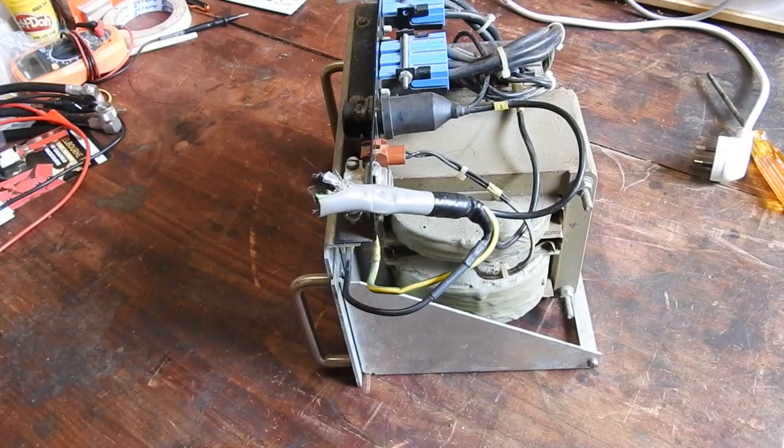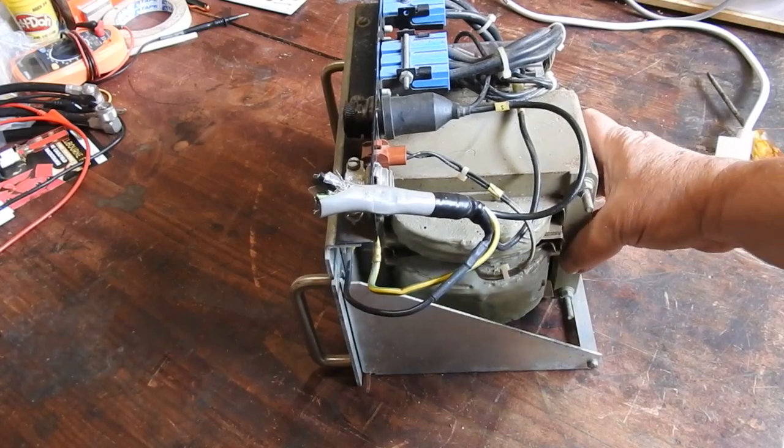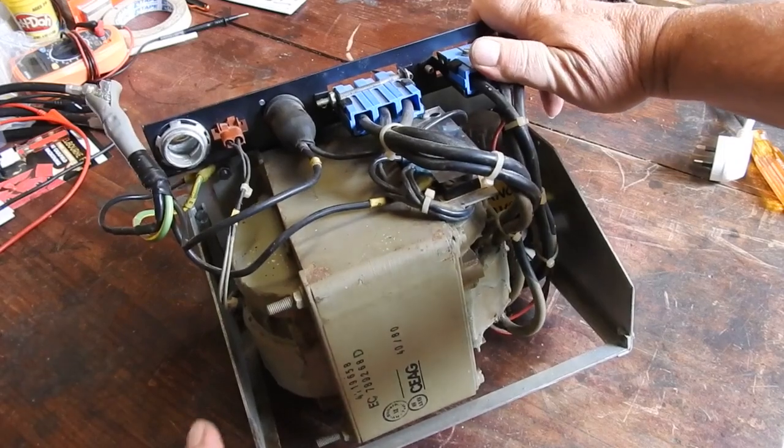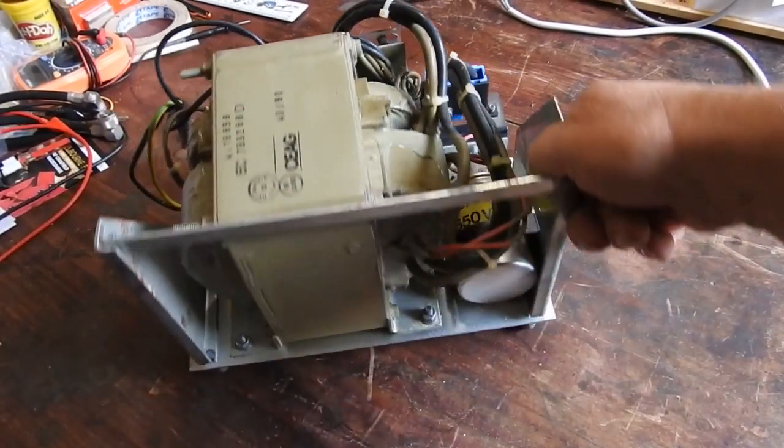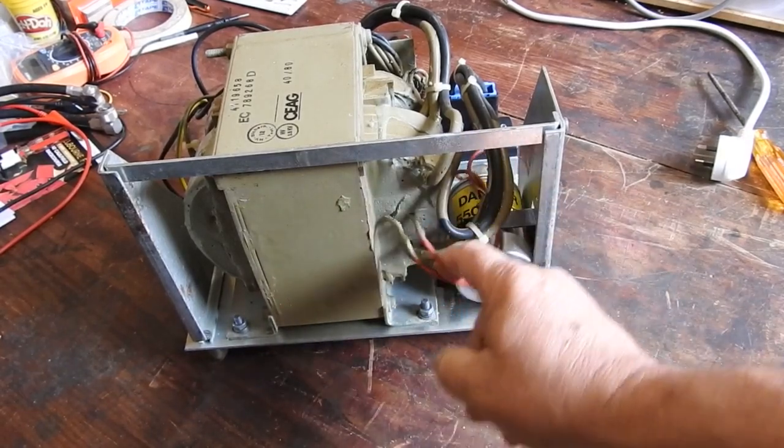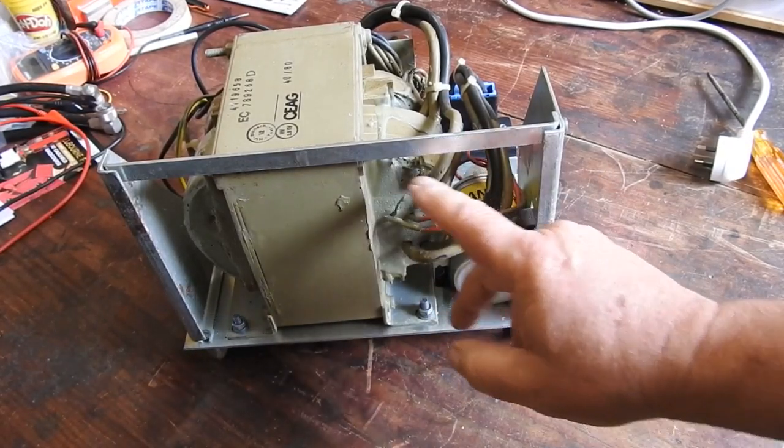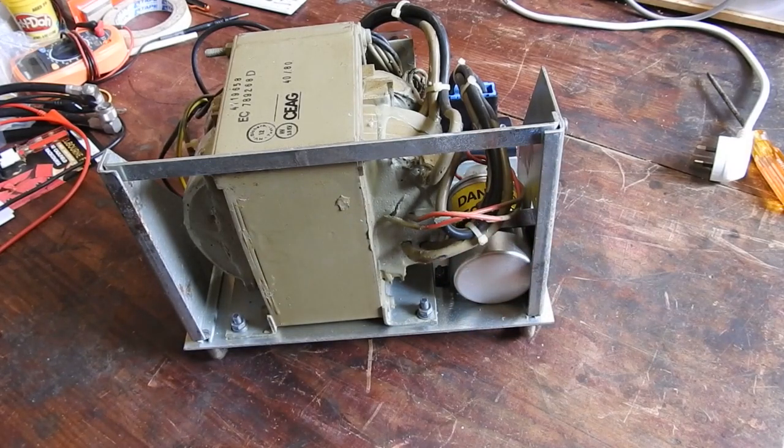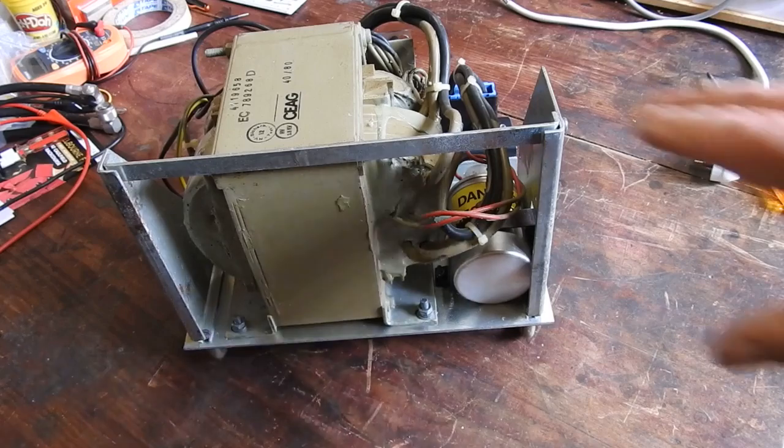Now what makes it different to an ordinary transformer? Well, this capacitor down here. That capacitor has got its own secondary winding that's in parallel with it. And those two, the capacitor and that winding, form a resonant circuit which is tuned to the 50 Hz mains.